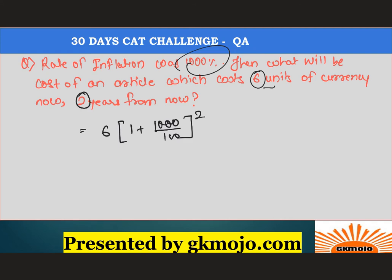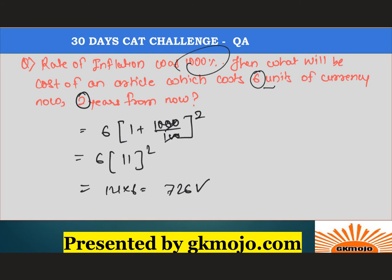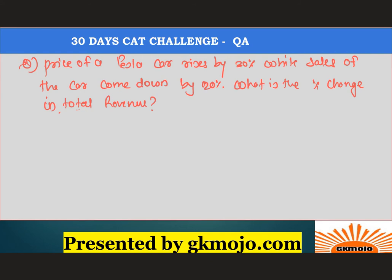This is called the future value in finance terms. Calculating it: the zeros cancel, and you get 6 multiplied by 11 squared, which is 121 multiplied by 6, giving 726. Two years from now, the cost of that article would be 726 units. That is the correct answer.